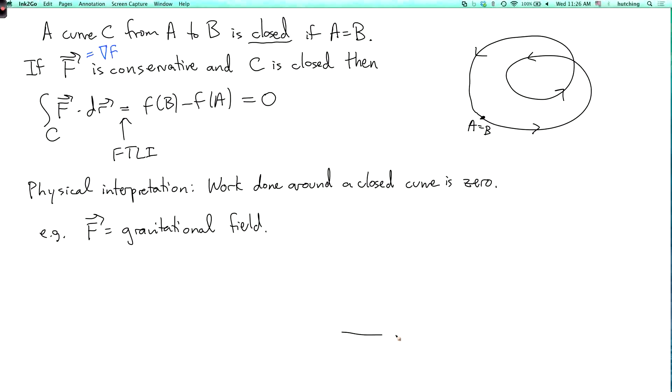Suppose our curve C, or a closed curve C, is a road. So it's a loop. You start and end at the same point. Now, let's just suppose hypothetically that the gravitational field looks like this.